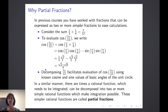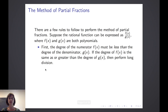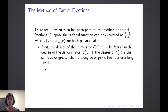These simpler rational functions are called partial fractions. Now there are some rules that have to be applied and followed in order to successfully perform the method of partial fractions. Suppose the rational function can be expressed as f(x) over g(x), where f and g are both polynomials. First of all, the degree of the numerator f(x) must be less than the degree of the denominator g(x). If the degree of the numerator is the same as or greater than the degree of the denominator, we have to perform long division before continuing.